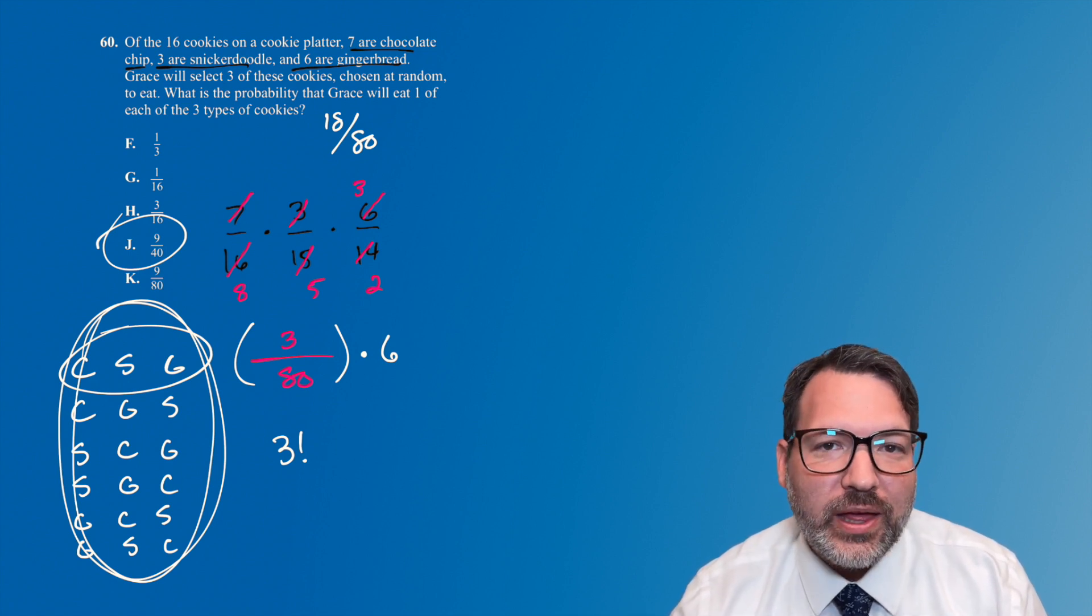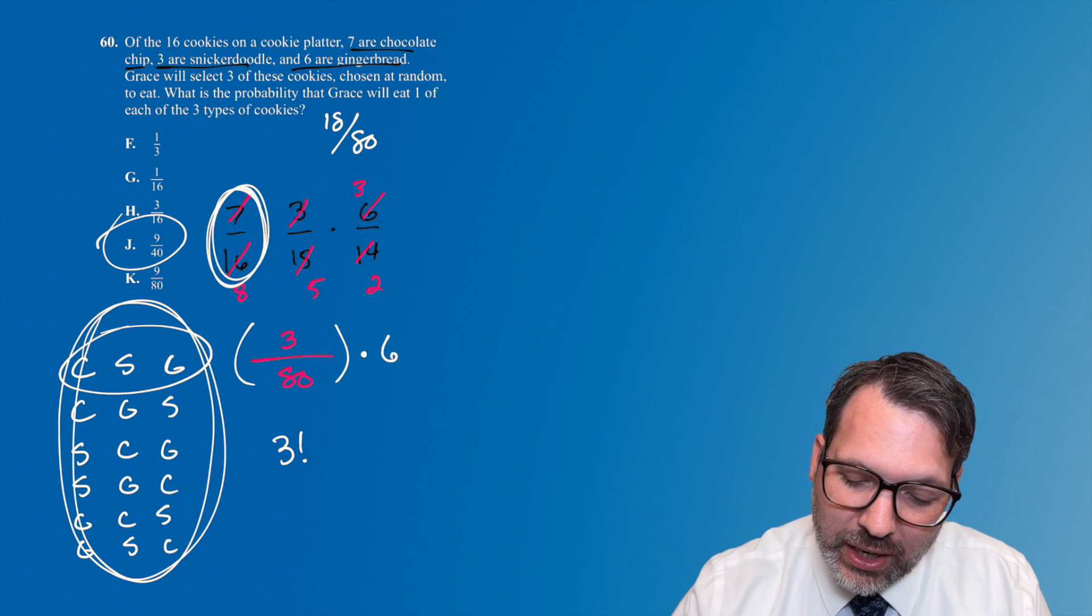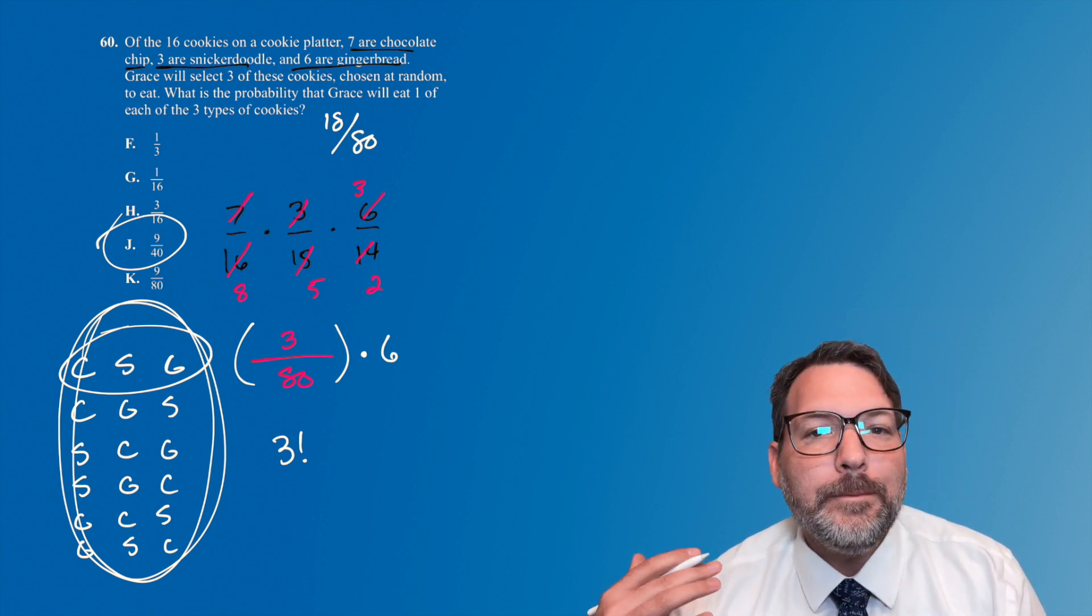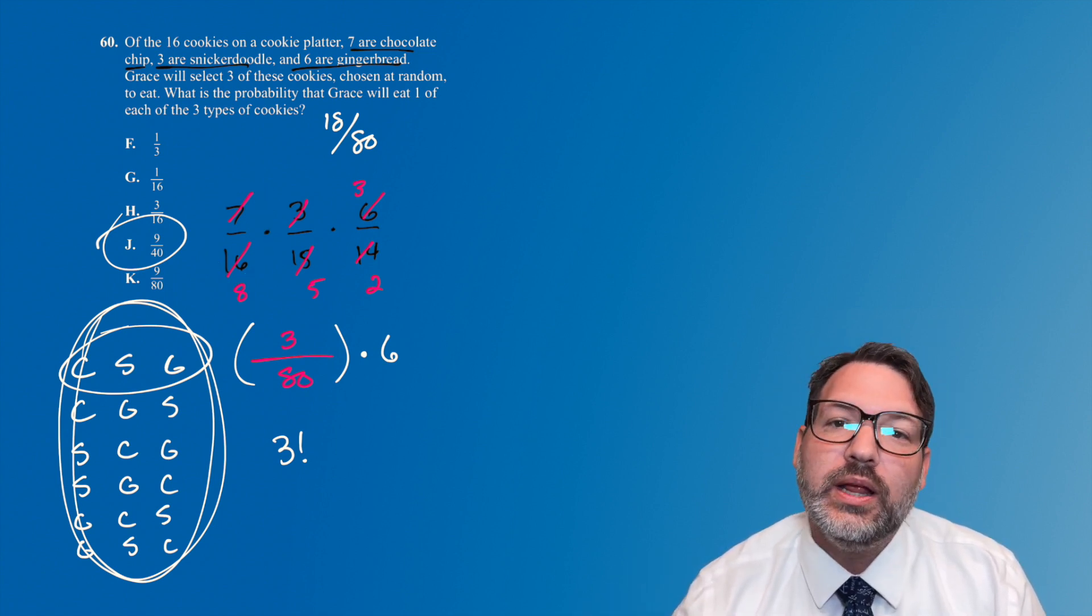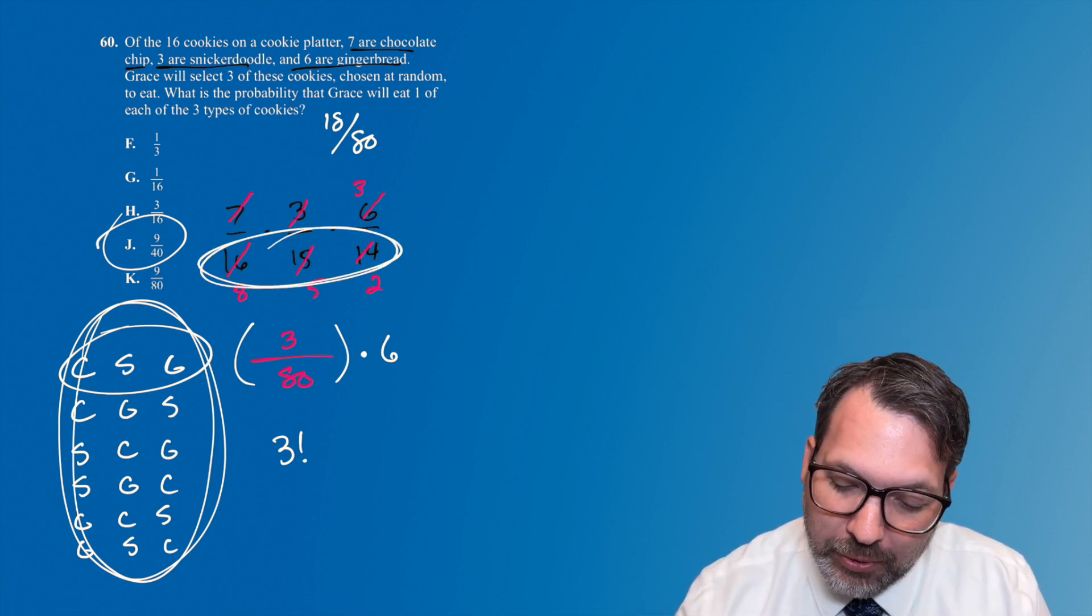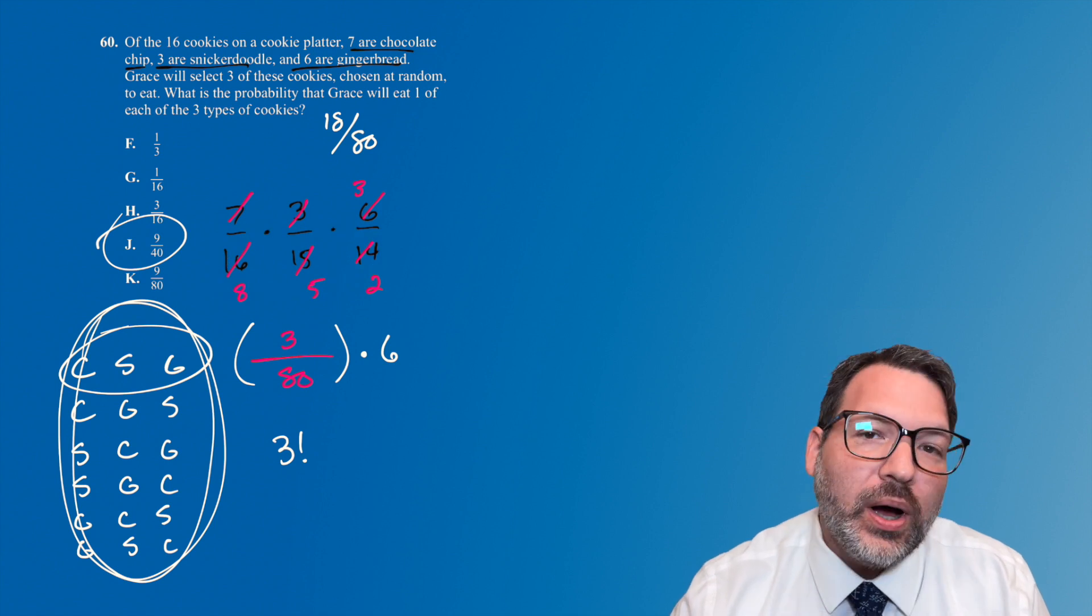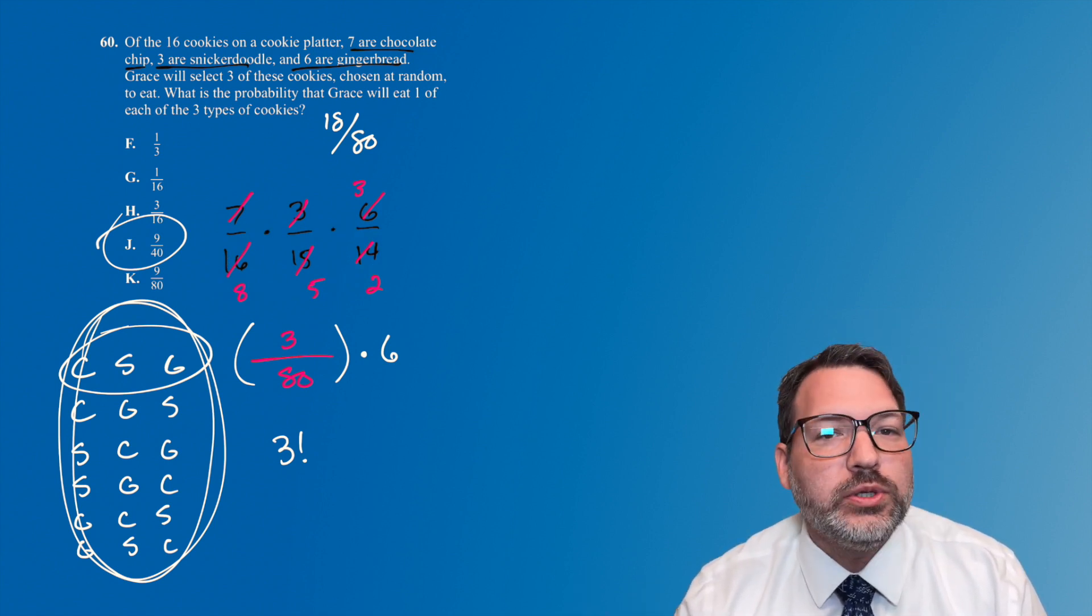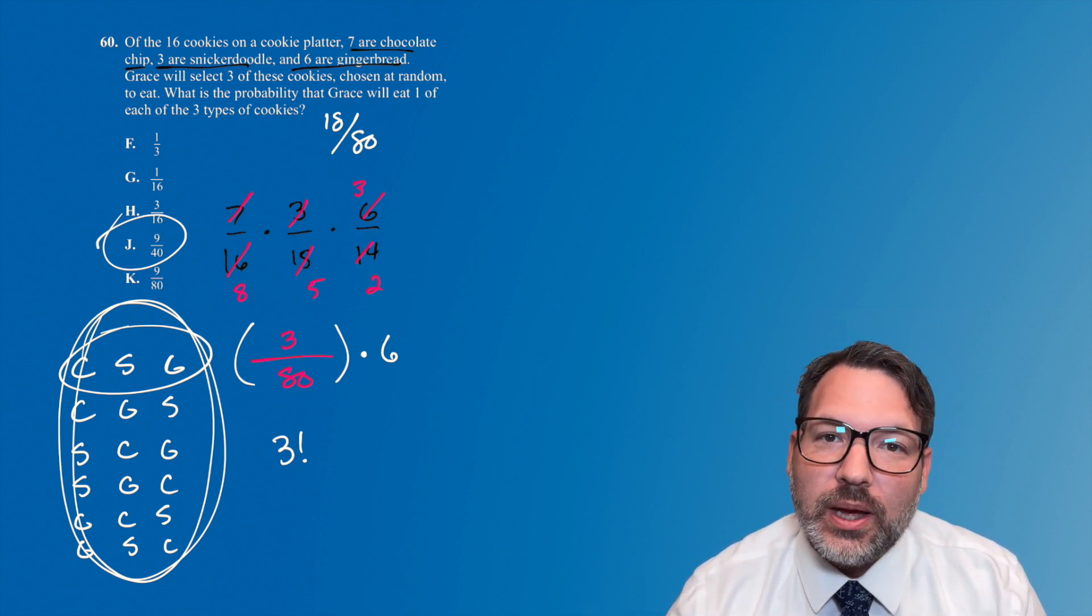If you have even a basic familiarity with probability, you know that we want to set up fractions that look like this. Some part, some number of outcomes we want, divided by the total. You probably also know that when we select multiple items, we want to make sure that we count down because basically our bucket of possible outcomes is going to go down by one every time we choose some object.